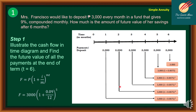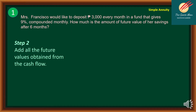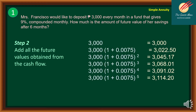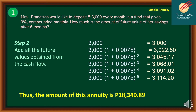Following the sequence, the first payment earns interest for 5 months, giving 3,000 × (1 + 0.09/12)^5, which equals 3,000 × (1.0075)^5. Step two is to add all the future values from the cash flow. For example, 3,000 × (1.0075)^0 is still 3,000. Upon computing and summing all values, the total is 18,340.89. Therefore, the amount of this annuity — the future value — is P18,340.89.